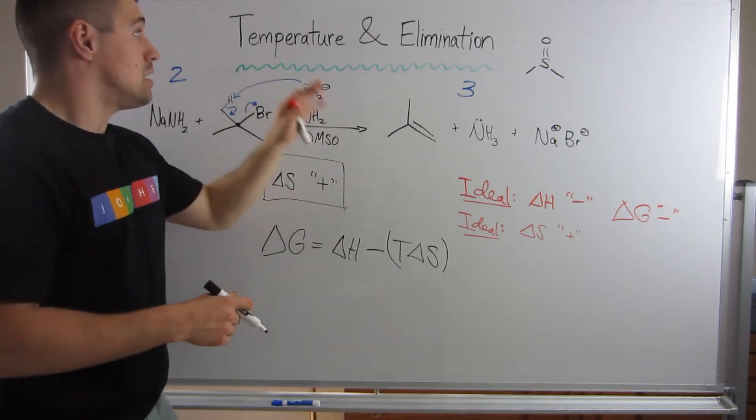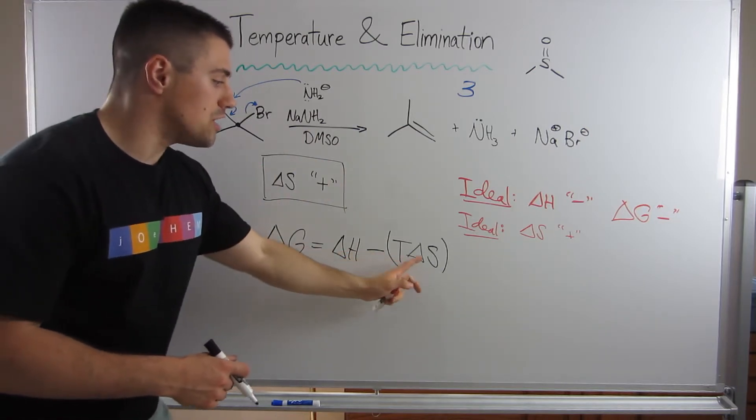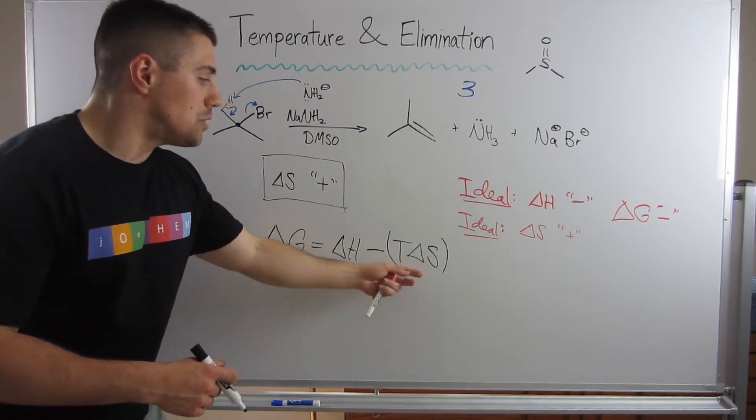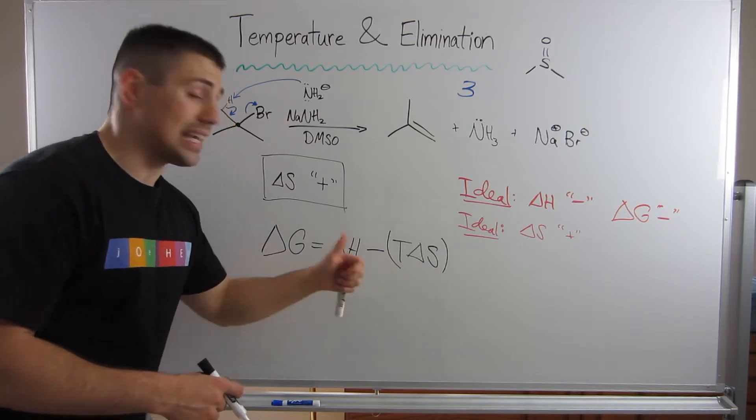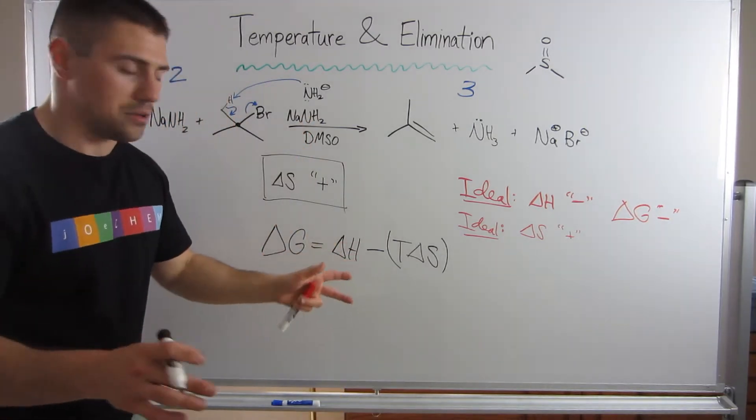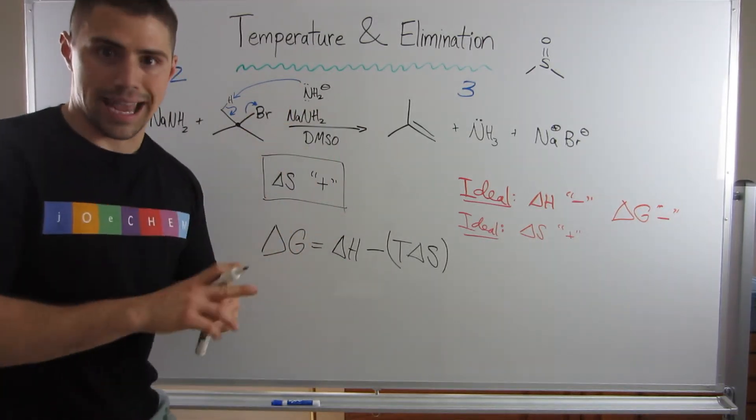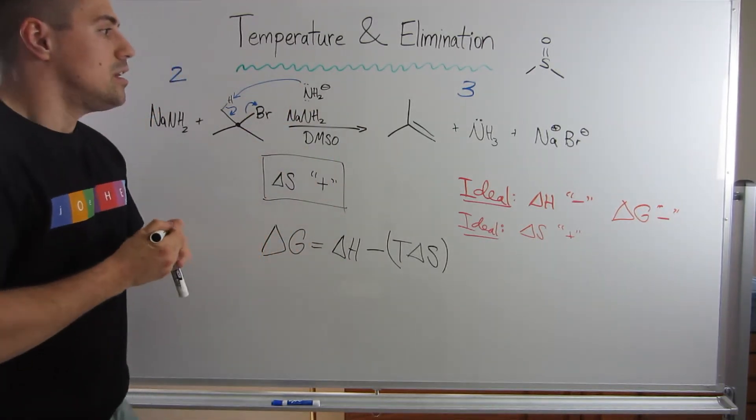That's why when you're dealing with elimination, it's great to crank that temperature up because you know this term is going to be positive. You can make this term larger by making the temperature higher, which means whatever your Delta H is going to be, that'll be that, and then your Delta G will continue to grow negatively.